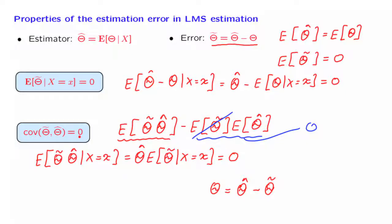When two random variables have 0 covariance, then the variance of their sum, or of their difference, is the sum of the variances. And this leads us to this relation, that the variance of our random variable can be decomposed into two pieces. One of them is the variance of the estimator, and the other is the variance of the estimation error.